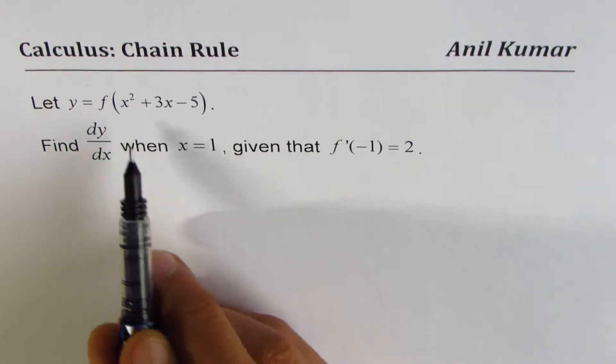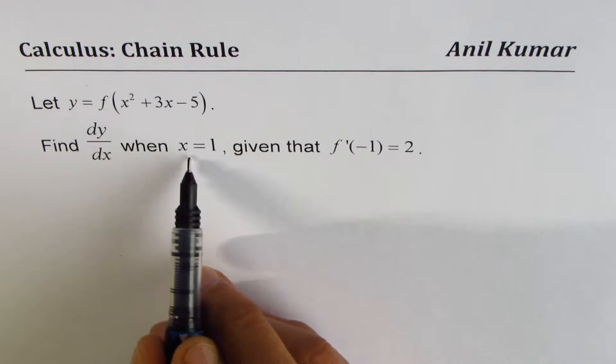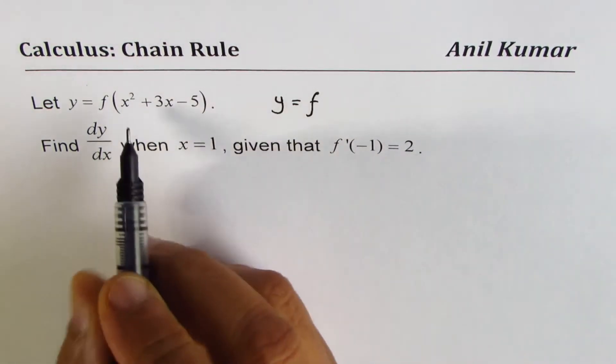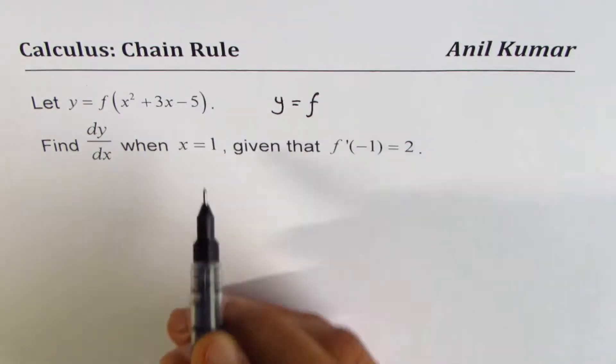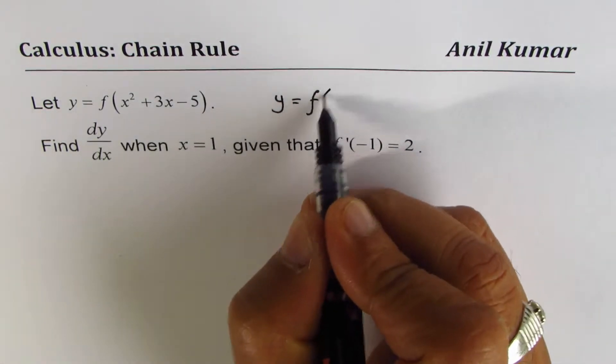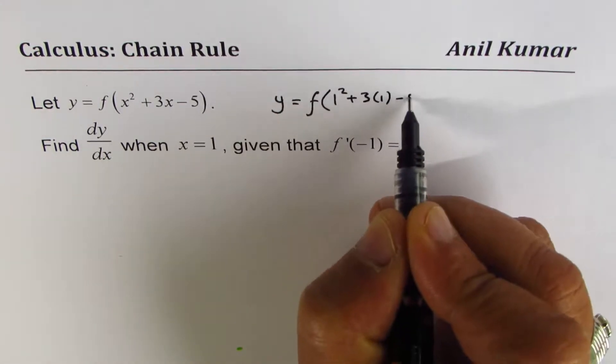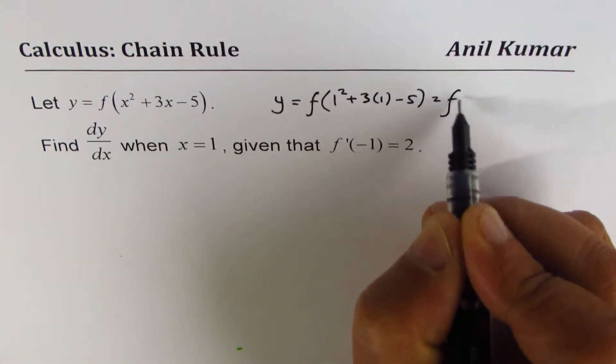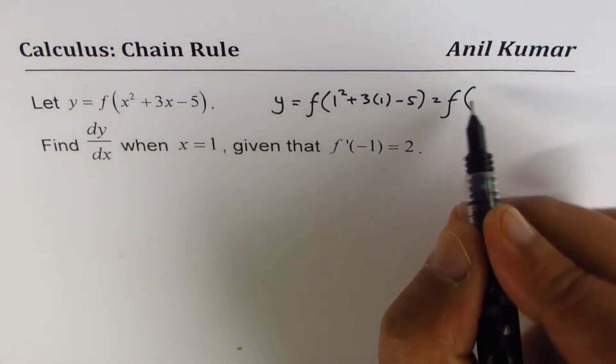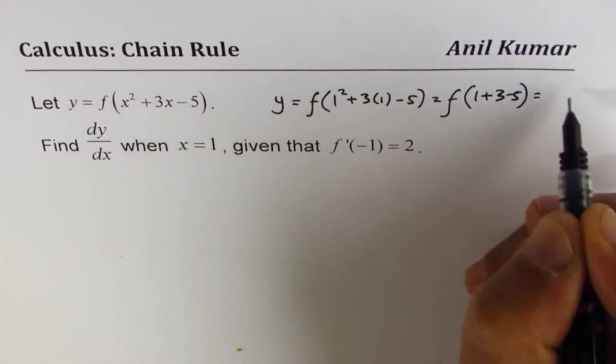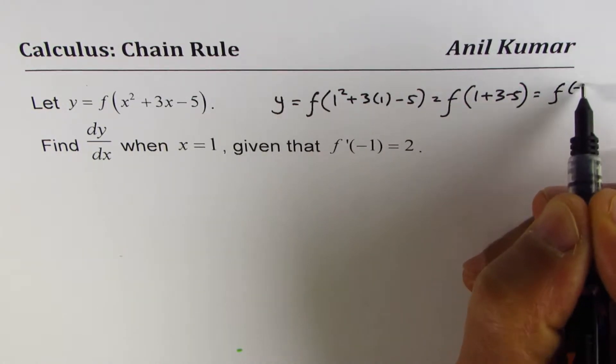Let's find what this is when x is 1. We are given y equals f of x squared plus 3x minus 5. I'll replace x with 1. So we get 1 squared plus 3 times 1 minus 5, which is f of 1. We can write 1 plus 3 minus 5, and that is f of minus 1.